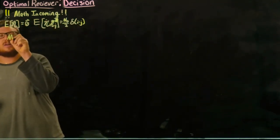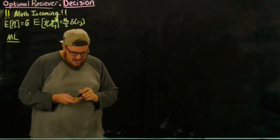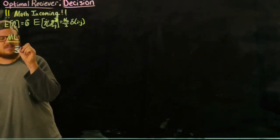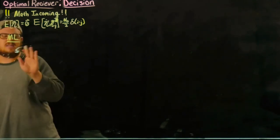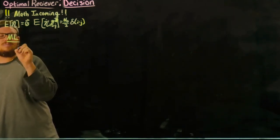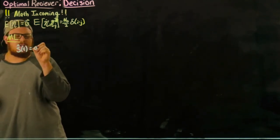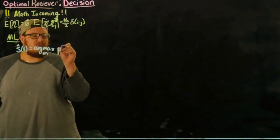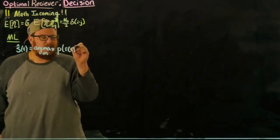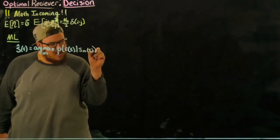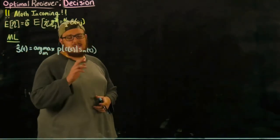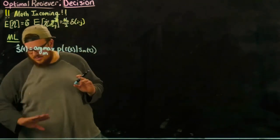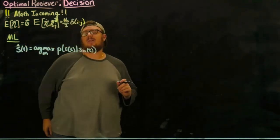If we go back to what our decision maker was: we were using the maximum likelihood philosophy. What the maximum likelihood philosophy says is that the decided signal ŝ(t) is going to be equal to the argmax over m of the probability of getting the received signal given that the m-th signal was sent — basically, we pick the signal that gave us the best chance of getting what we did. We assume all signals are sent equally likely beforehand in order to get from maximum a posteriori to maximum likelihood.